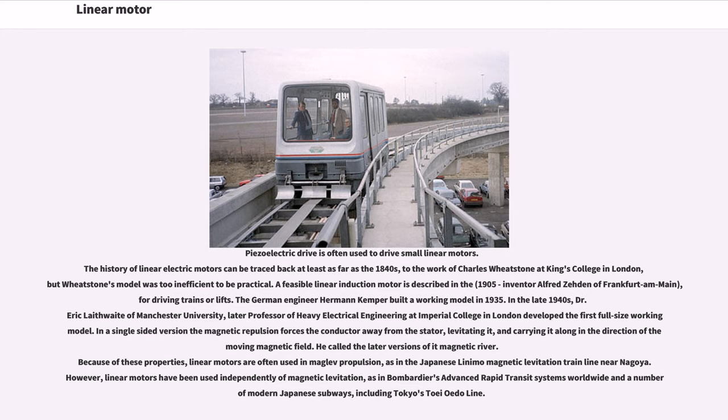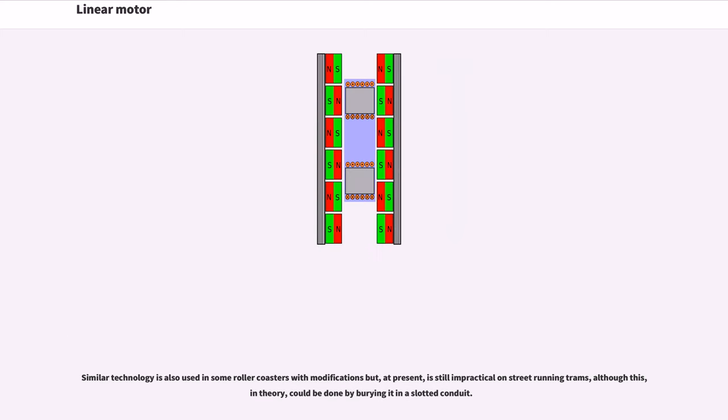Because of these properties, linear motors are often used in maglev propulsion, as in the Japanese Linimo magnetic levitation train line near Nagoya. However, linear motors have been used independently of magnetic levitation, as in Bombardier's Advanced Rapid Transit systems worldwide and in a number of modern Japanese subways, including Tokyo's Toei Oedo line.